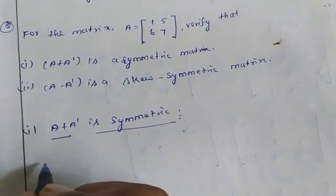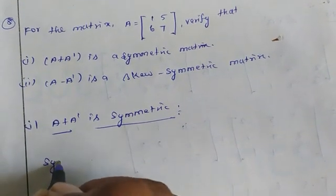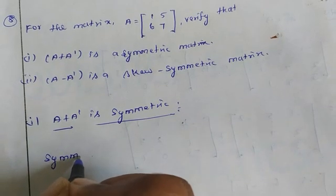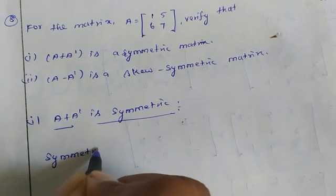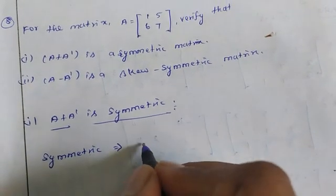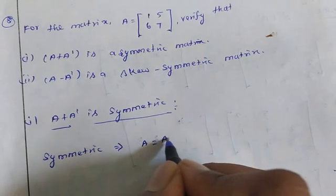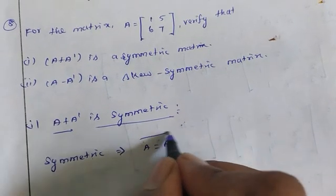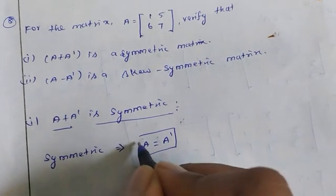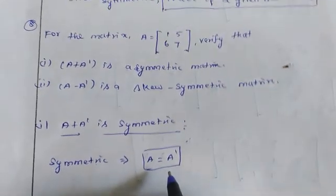Symmetric means A dash equal to A. So to verify, we need to find A dash and check that A equal to A dash.